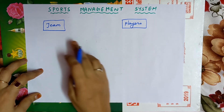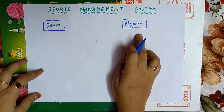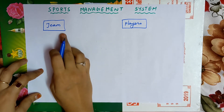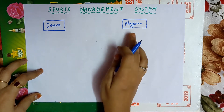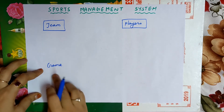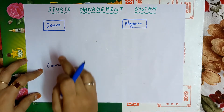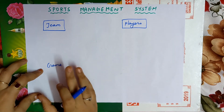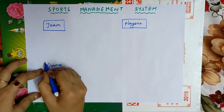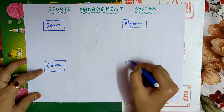If there is a team and players, without a game there is no use for having them. So game is an important entity. Game is not physically existing but it is conceptually existing — the team will be playing some game. Therefore it is an entity and must be written inside a rectangular box.